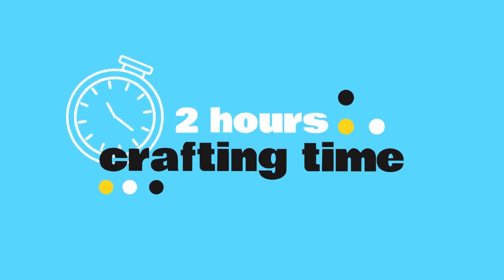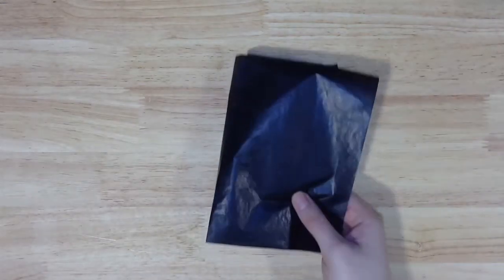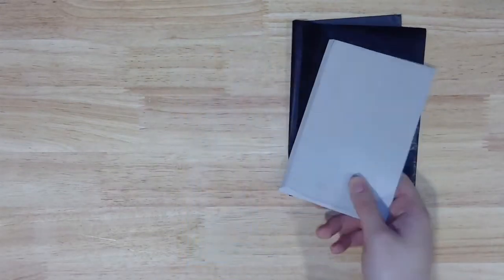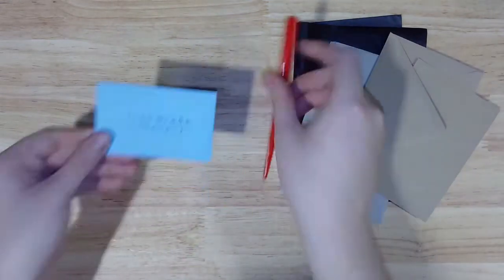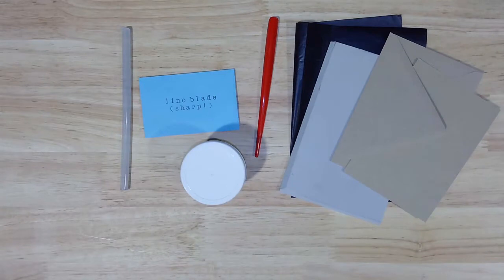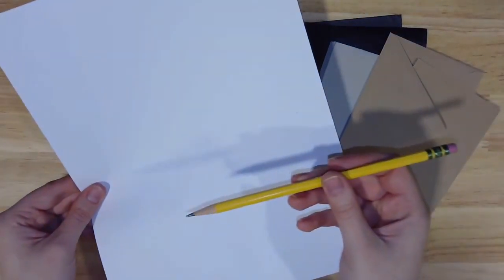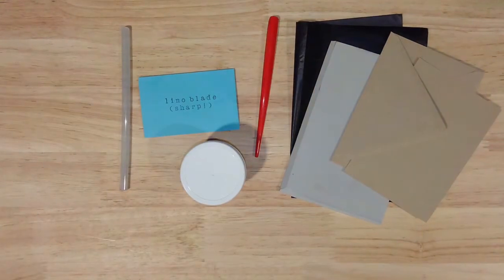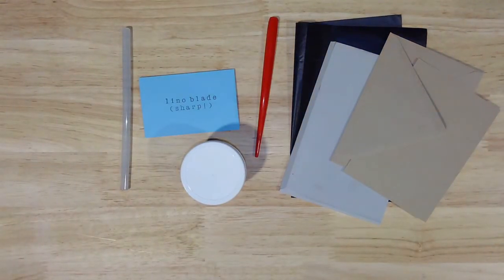Today's project will take most makers about two hours to complete. Here's what you'll find inside this month's kit: one sheet of carbon transfer paper, a linoleum block, some blank greeting cards and envelopes, a linoleum cutter and blade, a hot glue stick, and a jar of printing ink. From home you'll also need to gather some scrap paper and a pencil. Take a moment to gather your materials and then we'll get started.